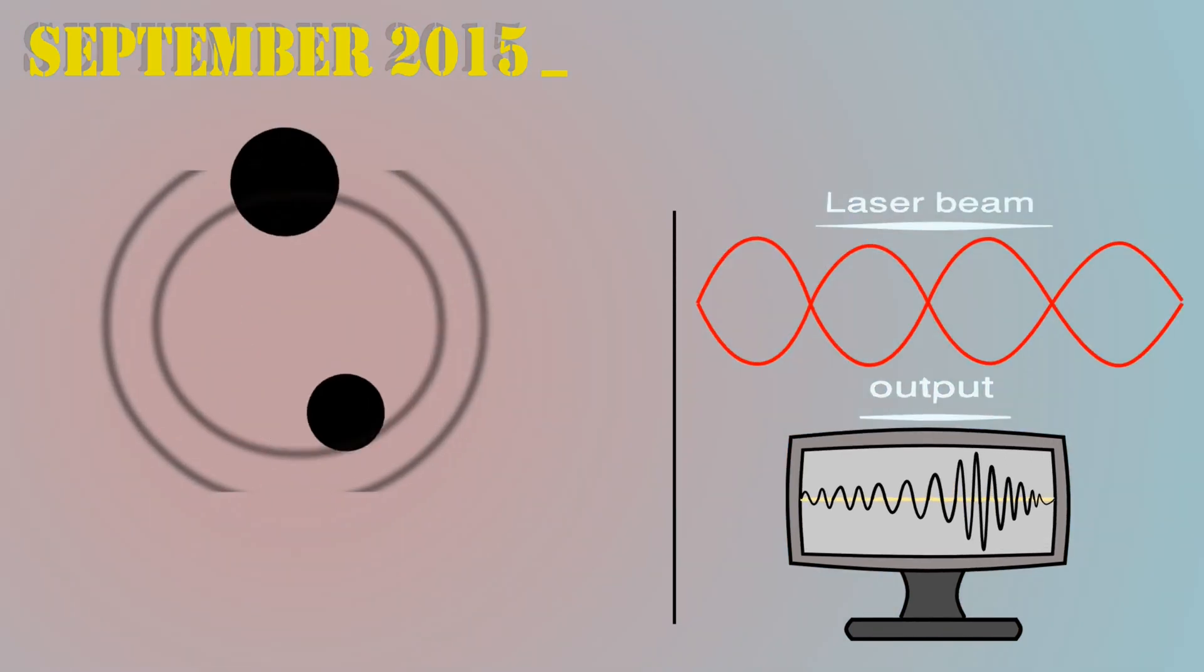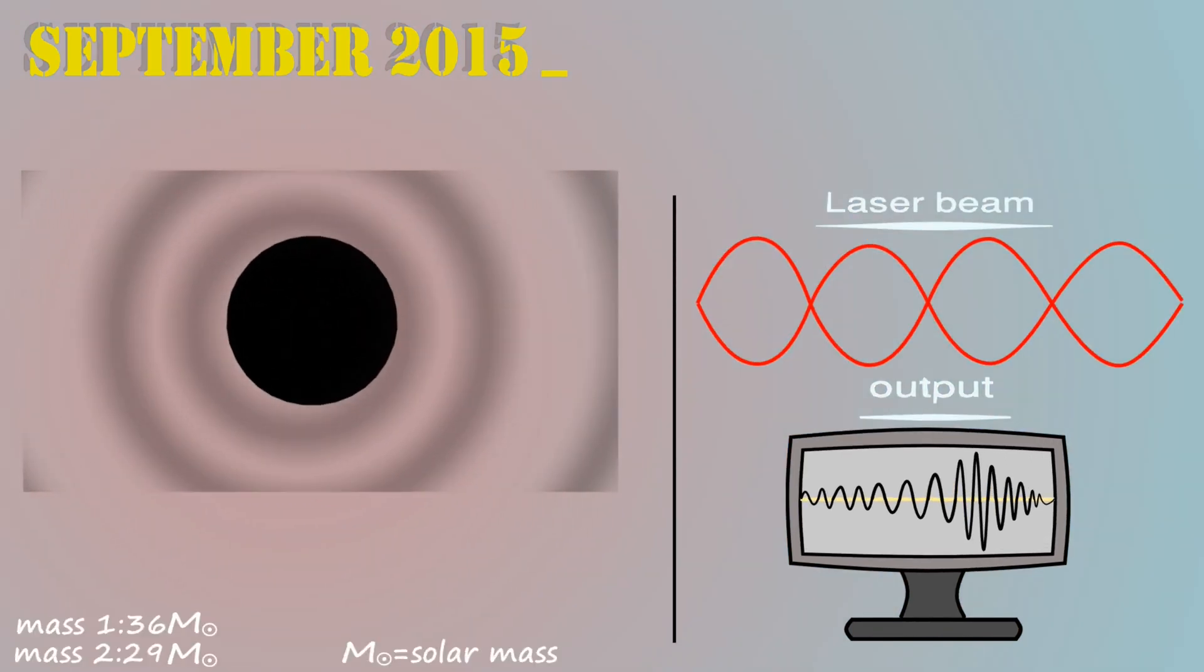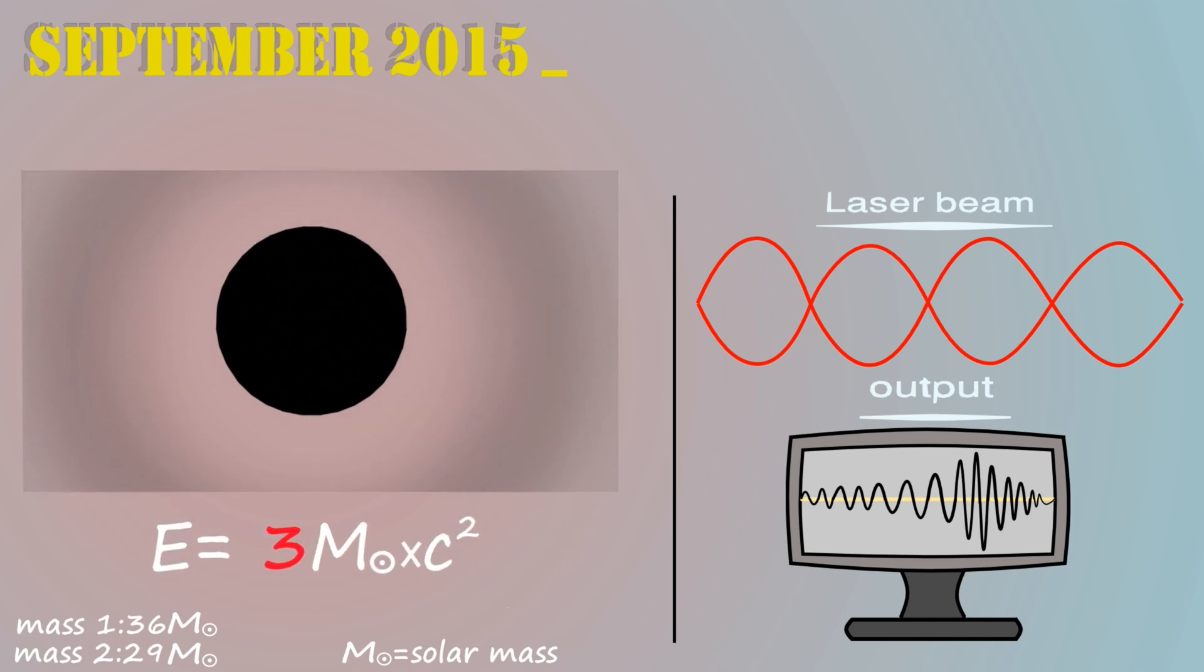These waves originated from the merger of supermassive binary pair of black holes 1.3 billion years ago, releasing an energy equivalent to three solar masses in the form of gravitational waves.